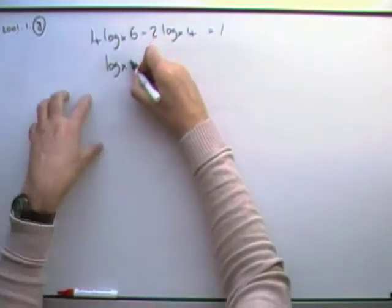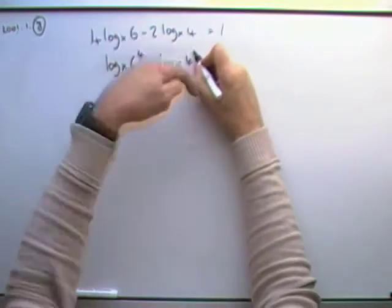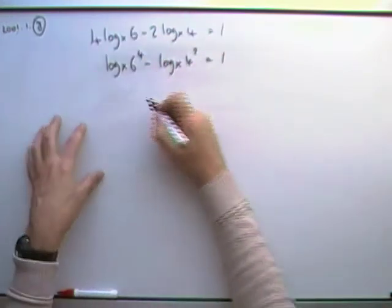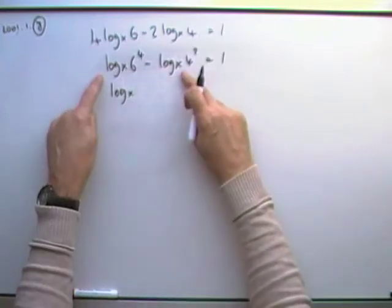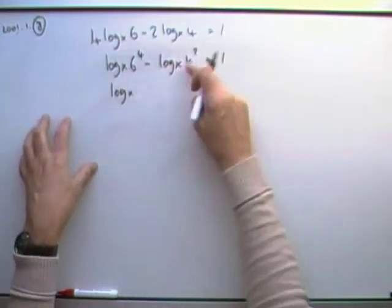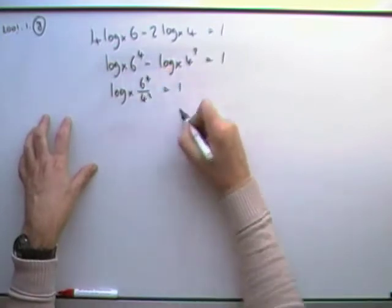So log base x of 6, put the 4 back in, minus log base x of 4, put the 2 back in, would be 1. Now you can gather them together. Log base x of, are subtracting logs, that'll be the quotient of the numbers that are operating on. So that's a division, it comes to 1.